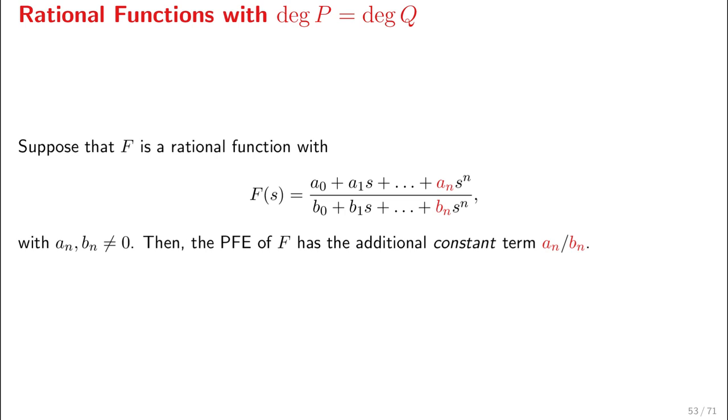So take this function F(s) where you have a numerator a₀ + a₁s + ... + aₙs^n, so we have degree n provided that aₙ is not equal to zero, and we have a denominator of the same degree. Then the question is, what is the partial fractions expansion of F? It is what it was before, only we have an additional constant term aₙ/bₙ.